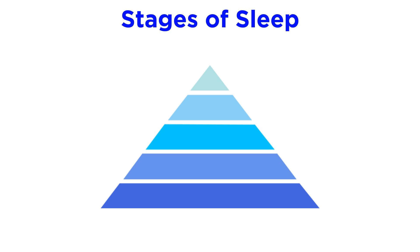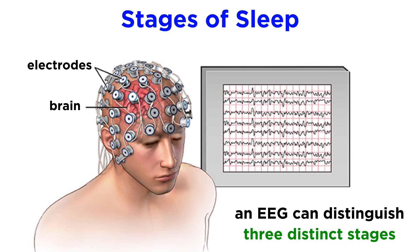To understand sleep, we must first describe the stages of sleep. There are three stages of sleep, as can be distinguished by brainwaves on an EEG, which we introduced in a previous tutorial, so be sure to review that one if necessary.